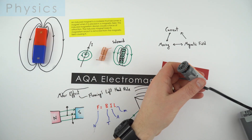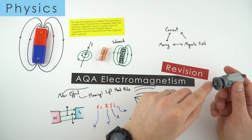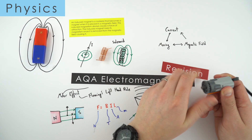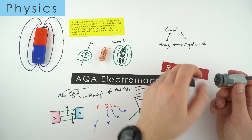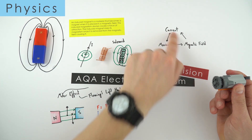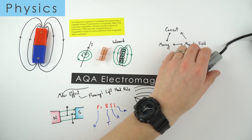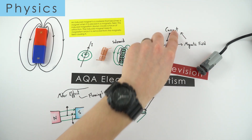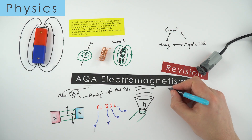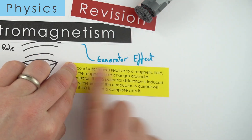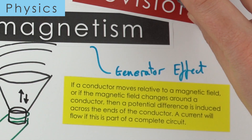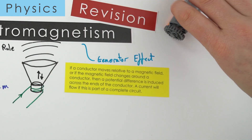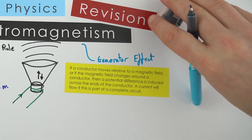This doesn't have to be just a motor. If we think about moving a conductor inside a magnetic field, we are now using it as a generator. By moving the conductor inside the magnetic field, we induce a potential difference and therefore induce a current. So a motor and a generator are very, very similar — we're completing the other side of the triangle. With the generator effect: if a conductor moves relative to a magnetic field, or the magnetic field around a conductor changes, we induce a potential difference across the ends of the conductor. If this is part of a complete circuit, a current flows.